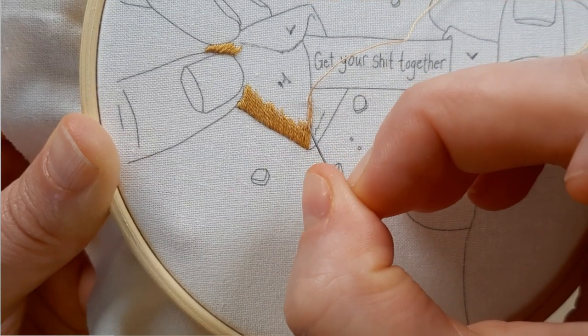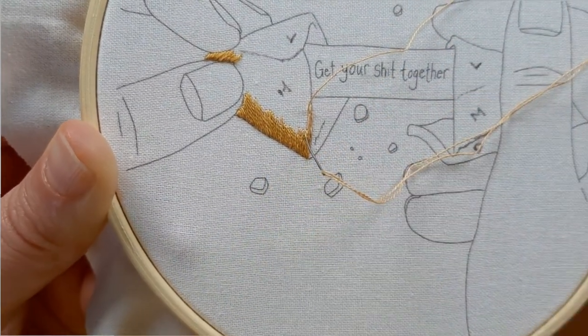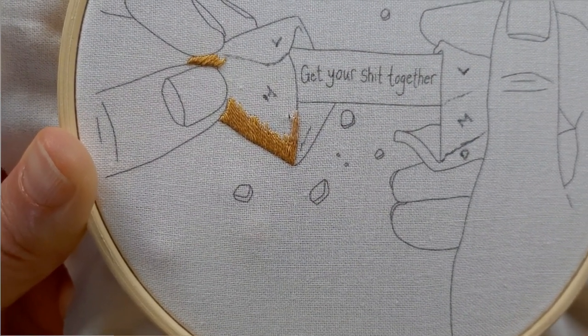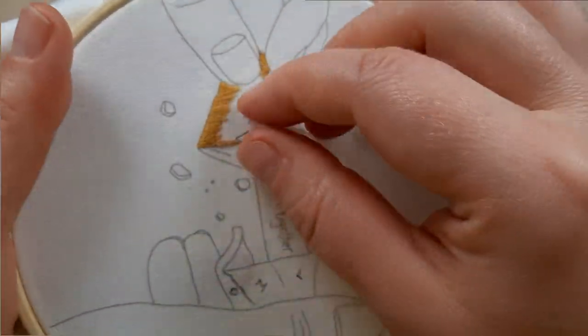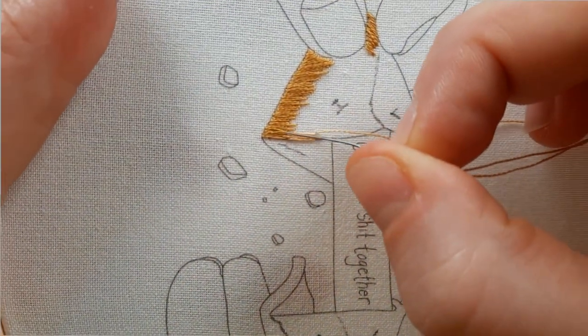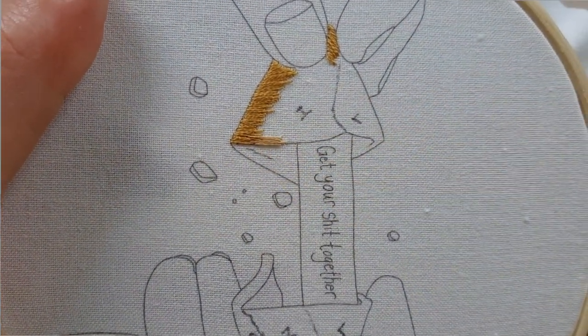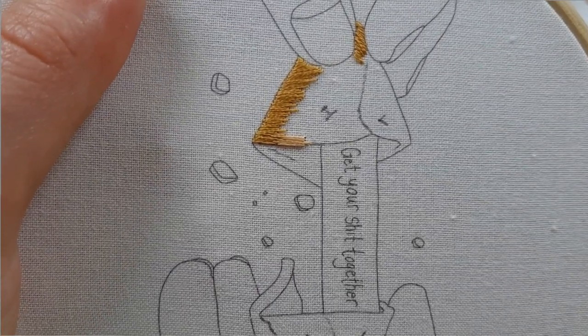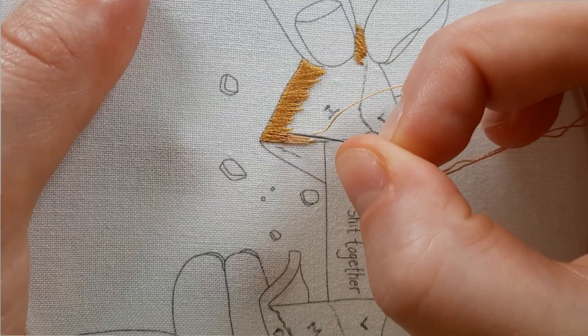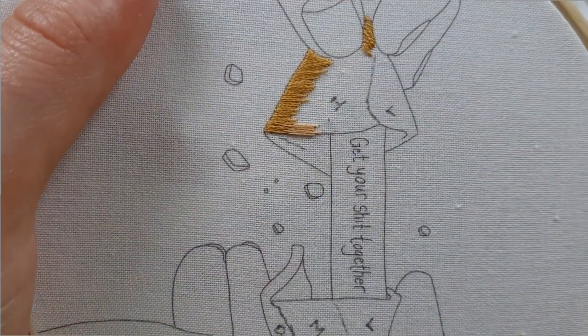I'm going to turn the work as well so you can get another angle at just how far down into the dark section I'm actually putting the needle. I'm bringing the thread pretty far down, doing my best to keep it in between the other two strands of floss from the darker shade.